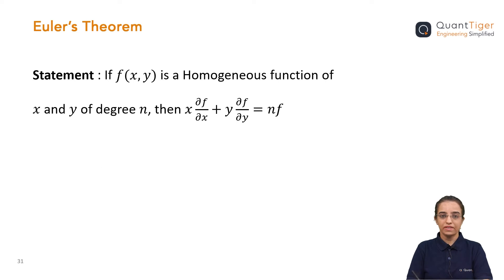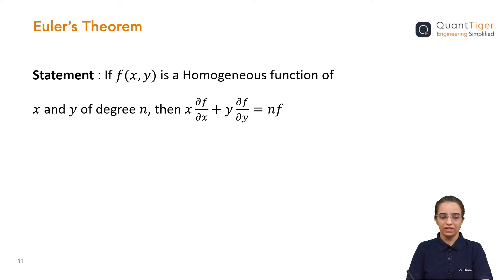Now let us see Euler's theorem statement. If f(x, y) is a homogeneous function of x and y of degree n, then we can write: x·(∂f/∂x) + y·(∂f/∂y) = n·f. This is what Euler's theorem says — if f is a homogeneous function of degree n, where n can be any number, then x·(∂f/∂x) + y·(∂f/∂y) = n·f, where f is the given function.